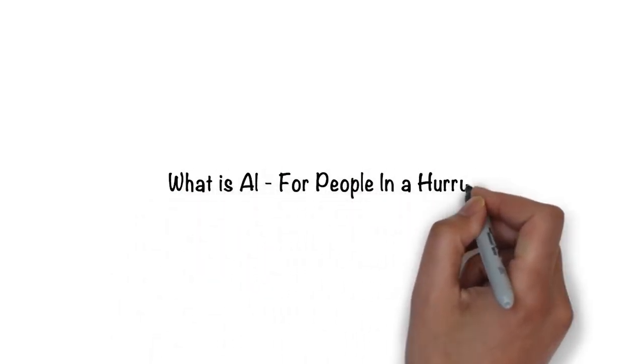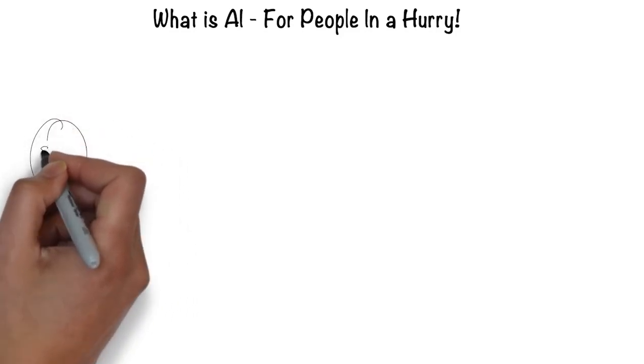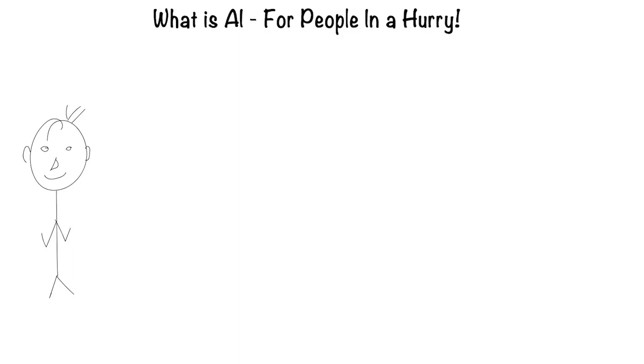Artificial intelligence for people in a hurry. The easiest way to think about artificial intelligence is in the context of a human. After all, humans are the most intelligent creatures we know of.